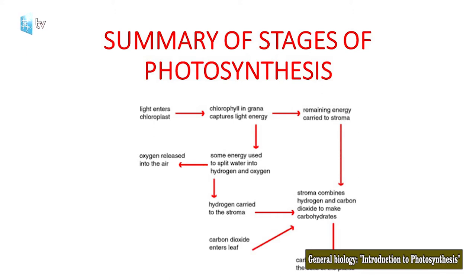The light-dependent stage occurs in the chloroplast. Which part of the chloroplast is important for this process? The thylakoid, and especially the grana, are important for this process.